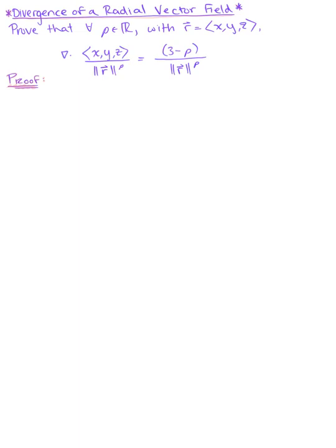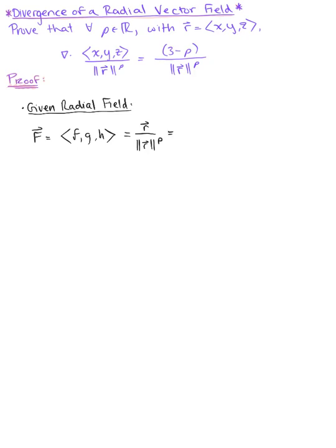Now that we have established the theorem for the divergence of a radial vector field, we need to prove it. We are given the radial field defined as vector F in space with components f, g, h. This radial field is defined by vector r over the magnitude of vector r raised to the p power, which equals the vector x, y, z all over x squared plus y squared plus z squared raised to the p over 2.